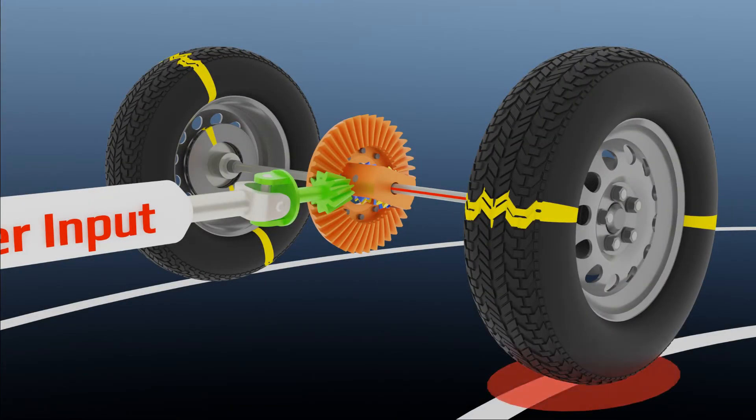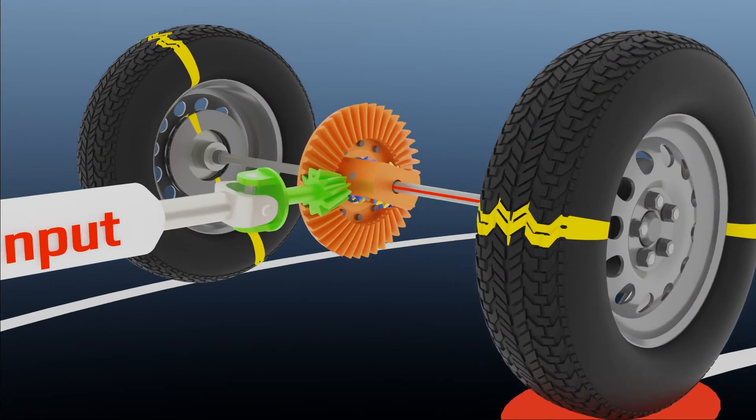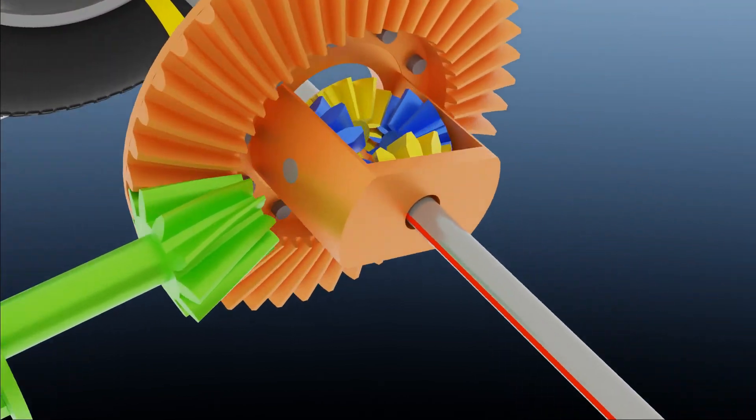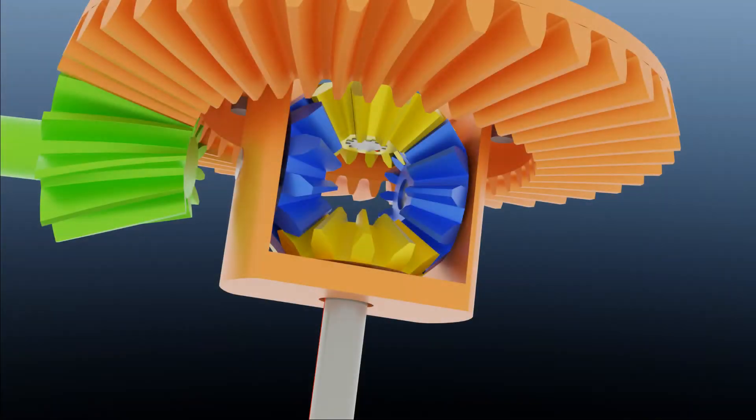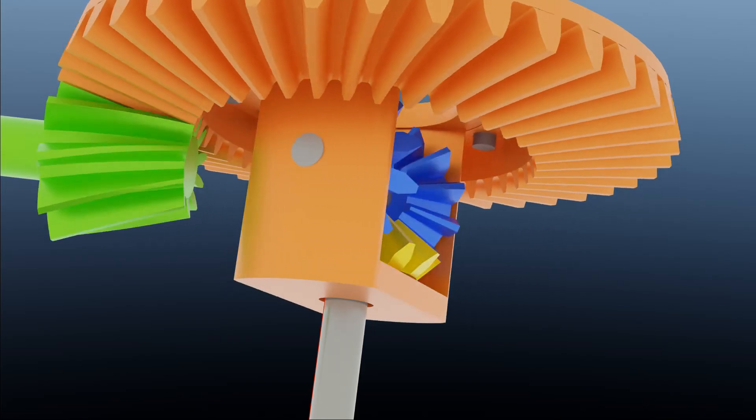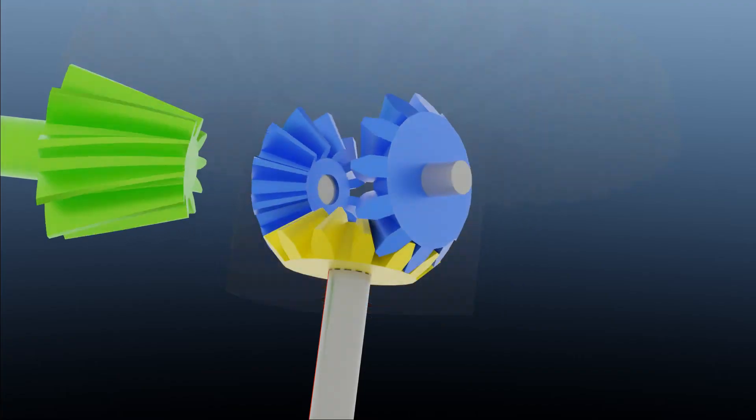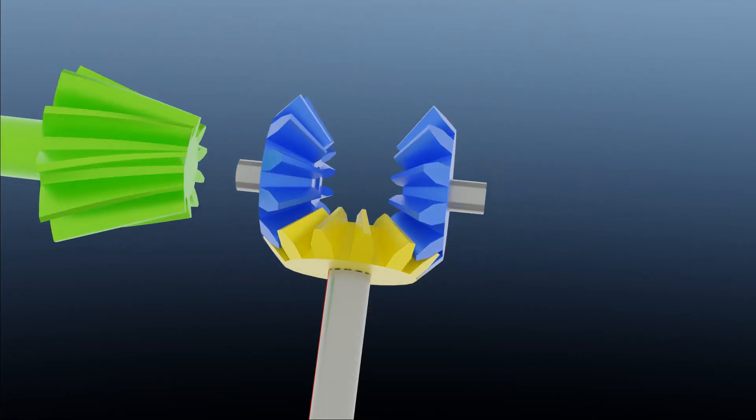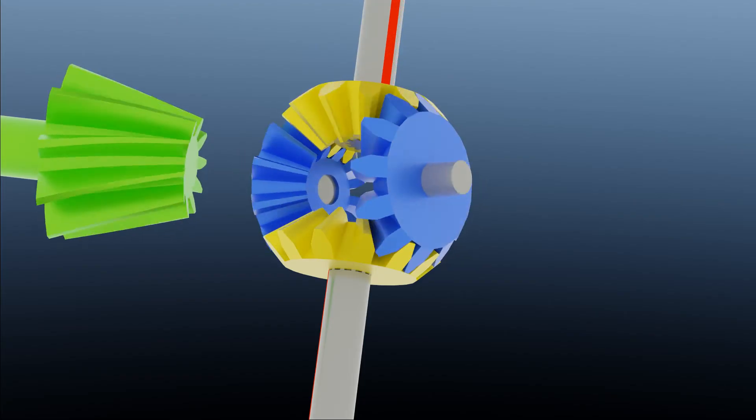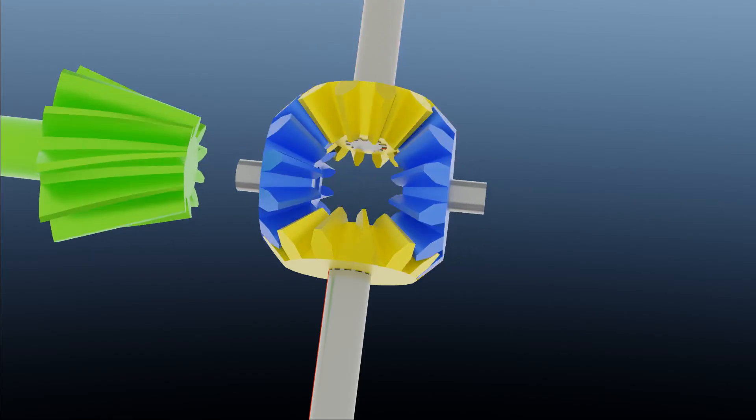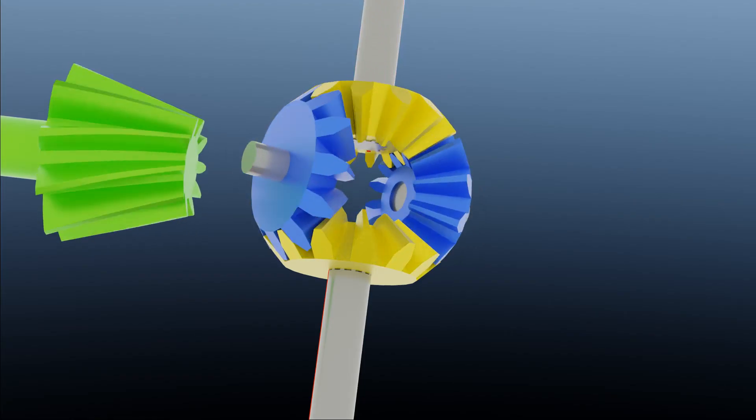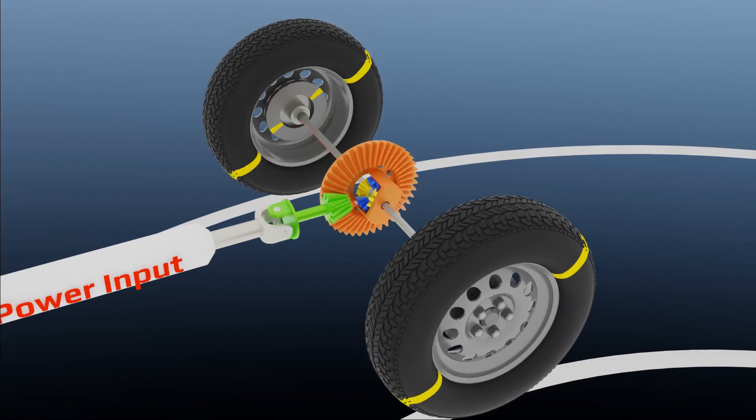The inner side wheel develops more friction between road and tire, so the inner side wheel as well as its side sun gear try to slow down. But in order to maintain crown gear rotational speed, spider gears start rotating on their axis. Spider gear rotation provides additional rotation to the opposite side sun gear. So this is how the outer side axle rotates faster than the inner side axle.